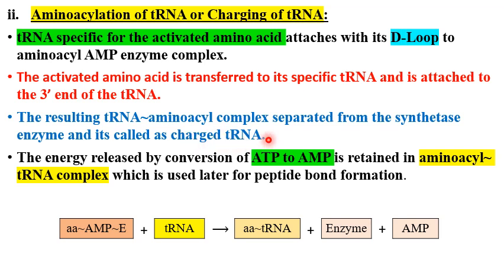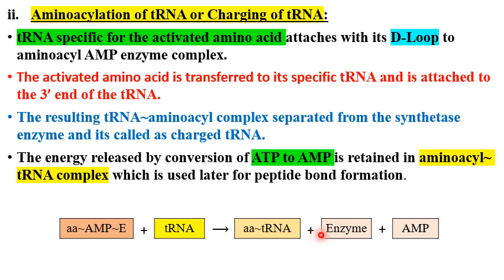This charged tRNA will move to the ribosomes for protein synthesis. The energy released by the conversion of ATP to AMP in the first step will be retained in the amino acyl tRNA complex and will be used later for peptide bond formation between two amino acids. In the reaction, the amino acyl AMP enzyme complex reacts with a specific tRNA; the activated amino acid attaches to the tRNA, separates from the enzyme, and AMP is displaced.